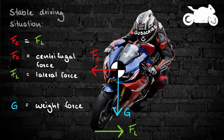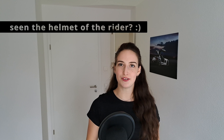First of all, I'm going to explain how to calculate the lean angle in general. We've got a motorcycle in a stable driving situation. When a stable driving situation is given, the centrifugal force and the lateral force have the same amounts. I'll explain these two forces in a few moments.